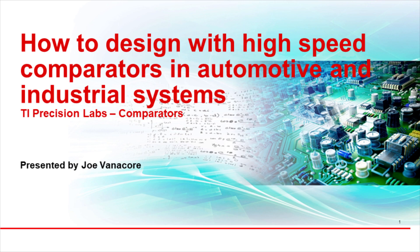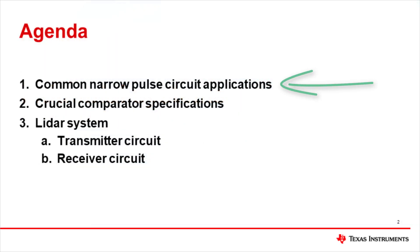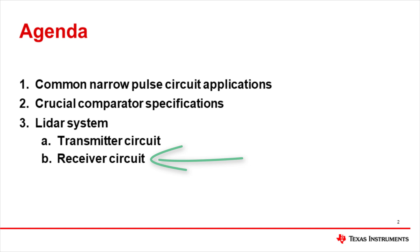Hi everyone, and welcome to this video about high-speed comparator applications in automotive and industrial sectors. We will first highlight some common narrow-pulse circuit applications, then discuss some crucial comparator specifications for these types of applications. We will also walk through an application for LiDAR systems, covering the LiDAR transmitter side and the photodiode receiver circuit with the transimpedance amplifier. Let's get started.